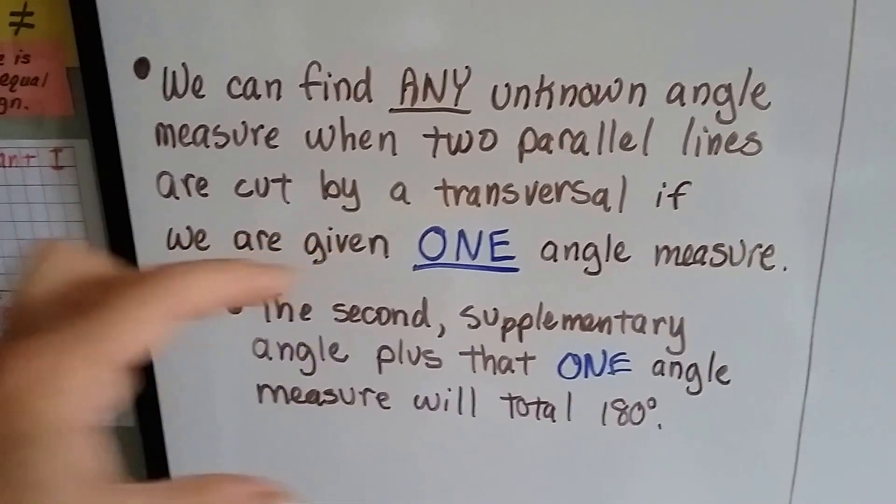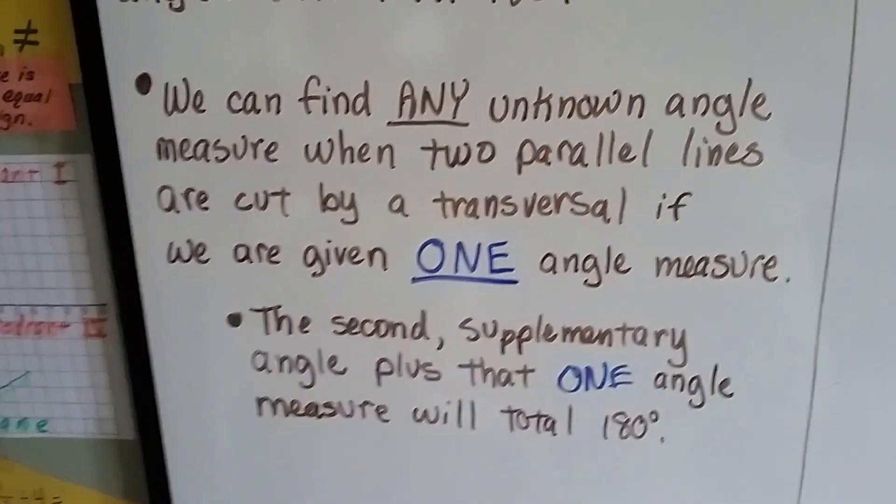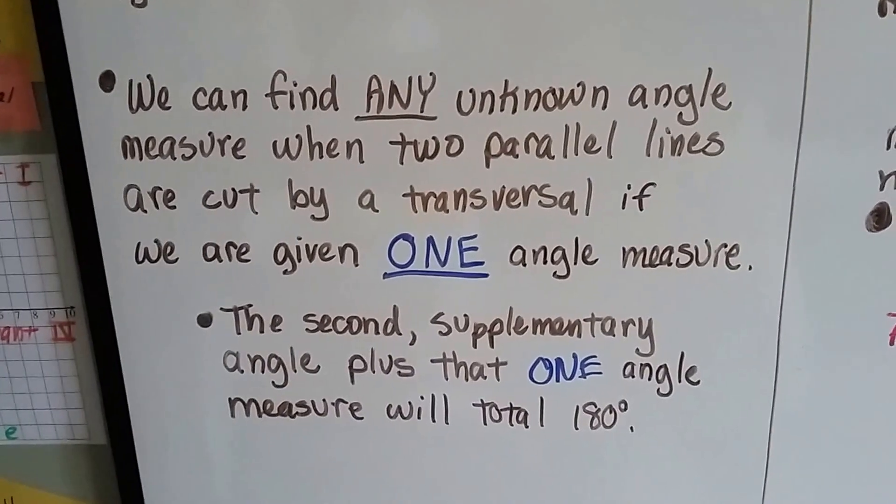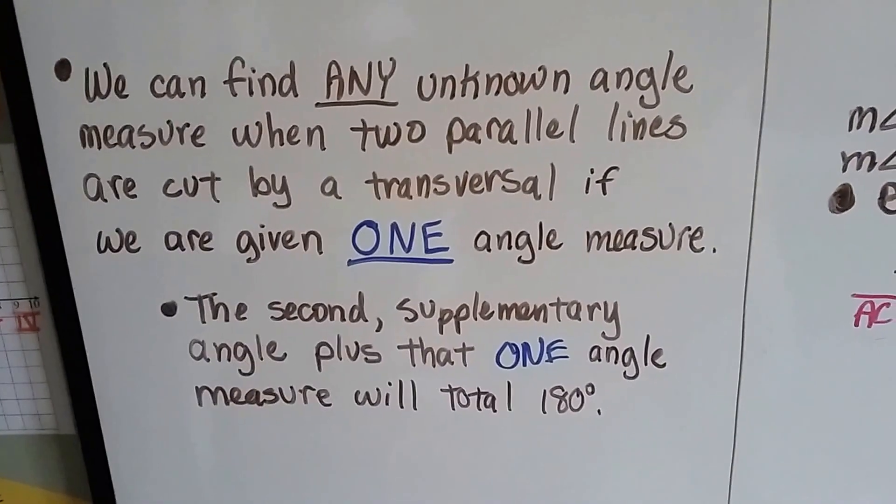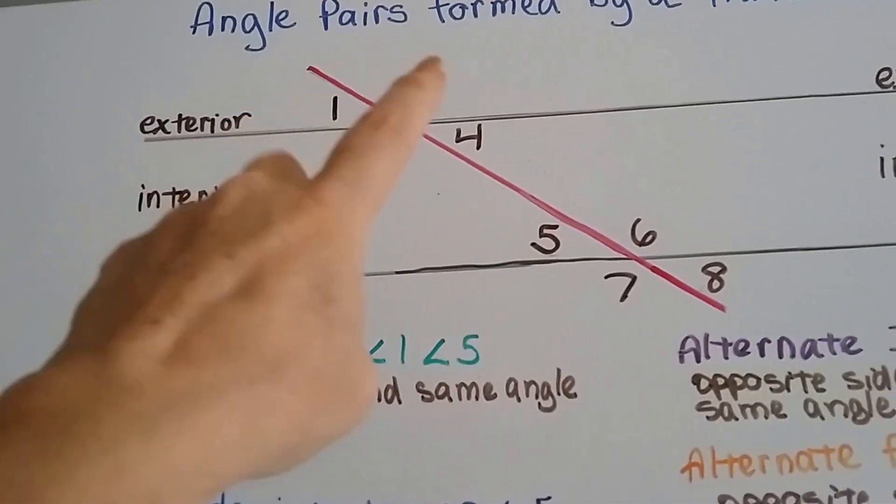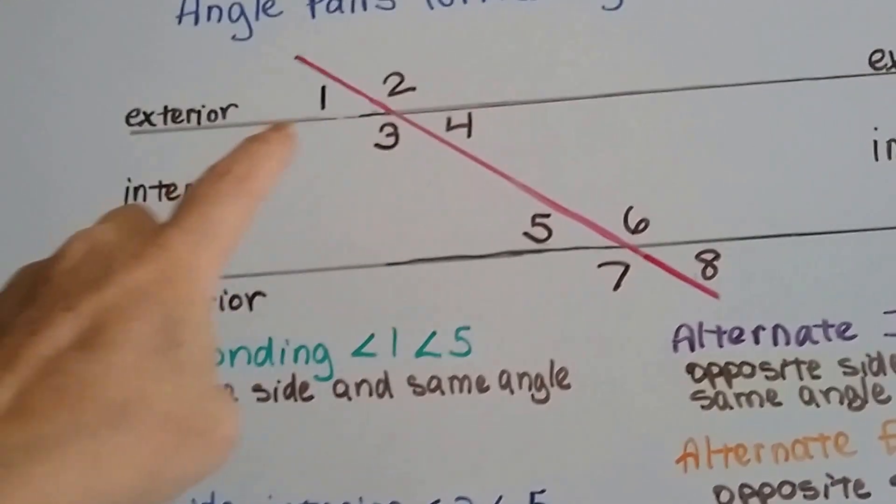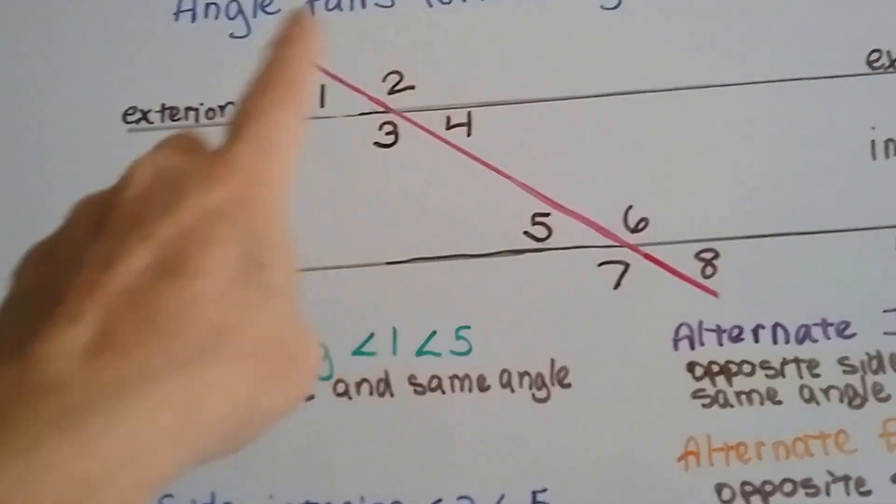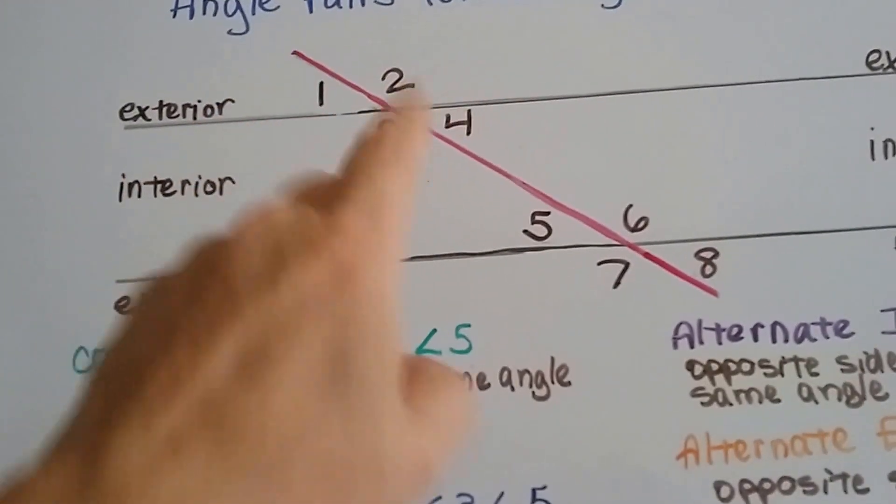We can find any unknown angle measure when we have two parallel lines that are cut by a transversal if we're given one angle measure. The supplementary angle plus that one angle measure are going to total 180 degrees. So if we know the measure of this angle, then we'll know the measure of this one because it's on a straight line and they have to total 180 degrees to be supplementary.